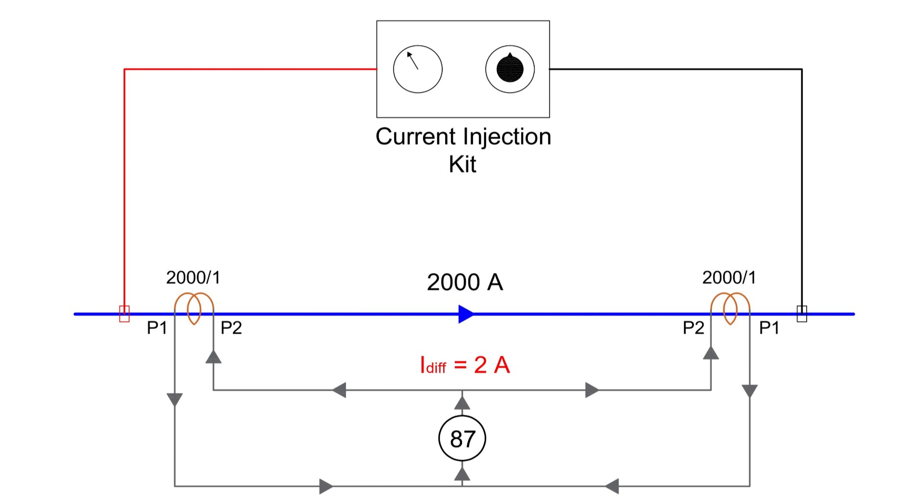By performing a primary injection test, we can verify the CT connections. If the differential current in the relay is zero, then CT polarities are correct.